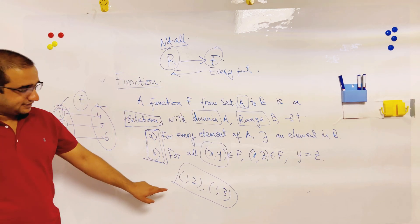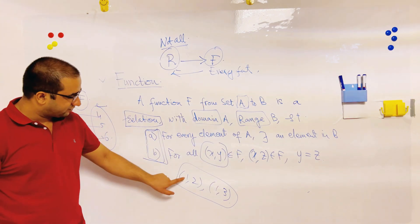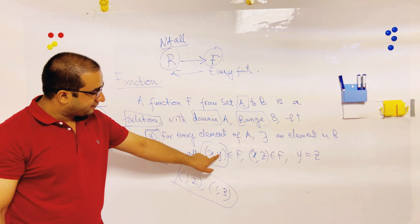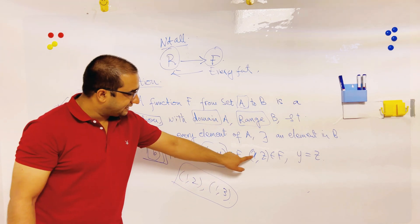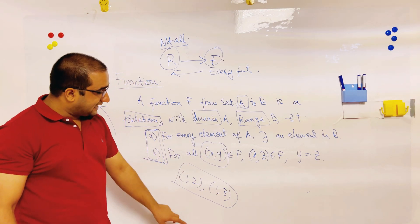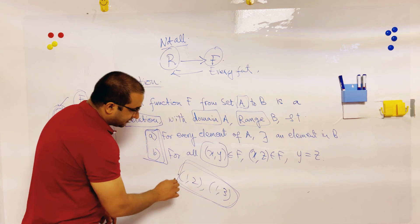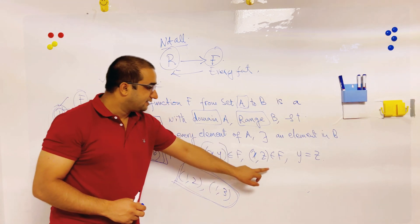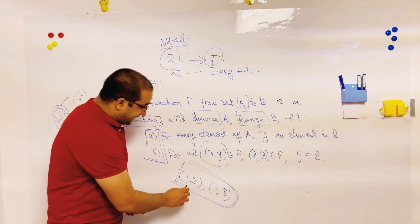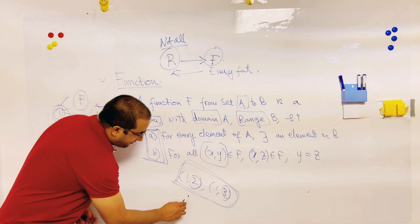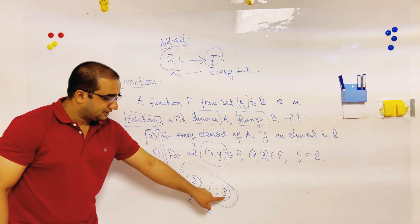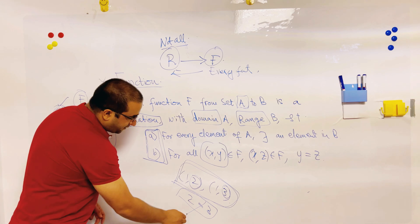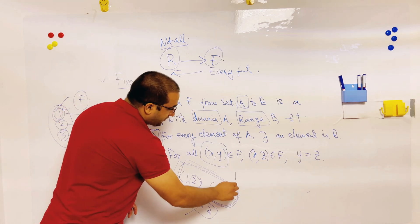If there are two ordered pairs such that their first element is x — say the first element is 1 in both cases — and the second elements are y and z respectively, then it is not possible that the same first element connects with two different elements of set B. So y must equal z. For example, if it implied 2 equals 3, that is not possible, so such ordered pairs are not allowed.